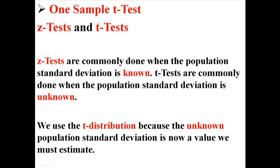We use the t-distribution in these cases because the unknown population standard deviation is now a value that we must estimate. We don't know it, so we have to put in an estimate for it. That's why we have this new distribution instead of just using the z-distribution.